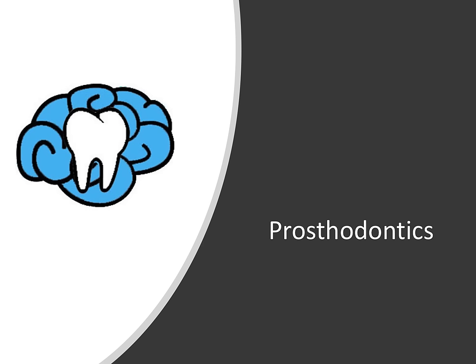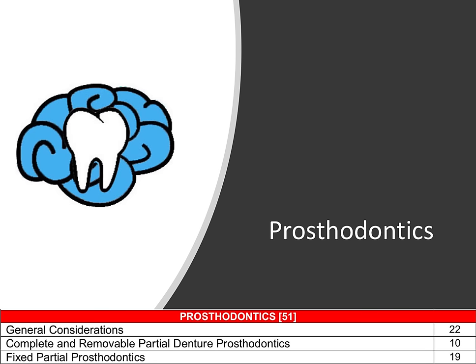Hey everyone, this is Ryan here and welcome to this next series on prosthodontics, one of the main clinical topics that appears on Part 2 of the dental board exams. It actually has some of the most questions of the entire exam, with 51 out of the total 500. We'll start with general considerations, then move on to removable prosthodontics, and finally finish up talking about fixed prosthodontics. Here is the exact question breakdown from the national board dental exams Part 2, with general considerations, removable pros, and fixed pros being the three categories we're going to focus on.